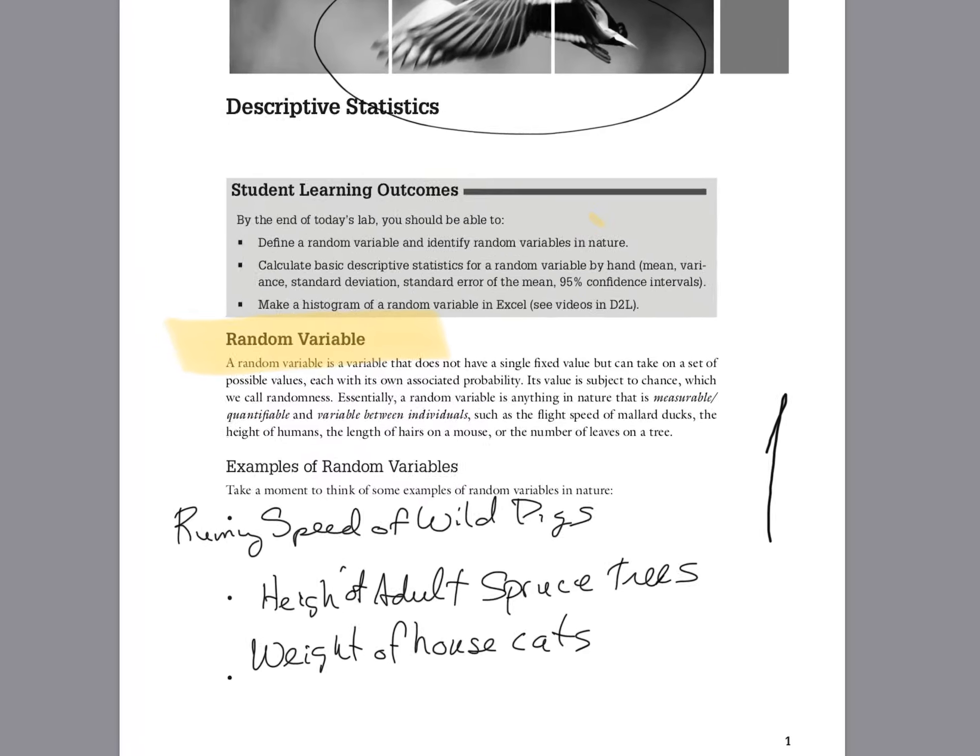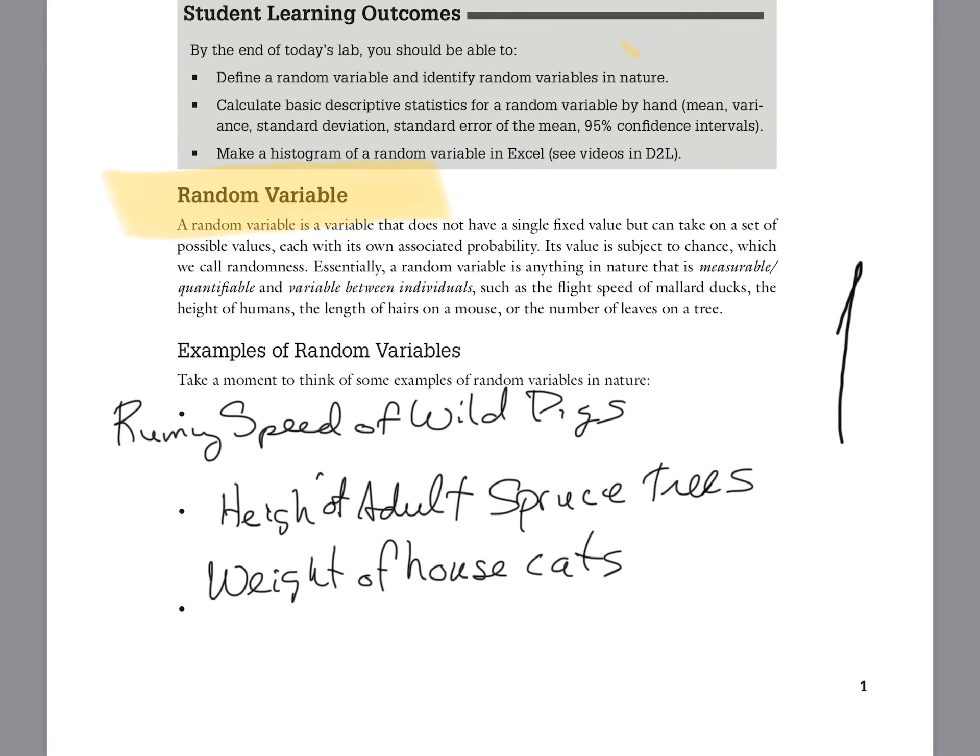Here we'd like you to look at examples of random variables. I already wrote some in and I didn't erase them. So here they are. I chose running speed of wild pigs. Those would be collared peccaries, the height of adult spruce trees, the weight of house cats from fat to thin. You can choose your own and you should write a few random variables in there.